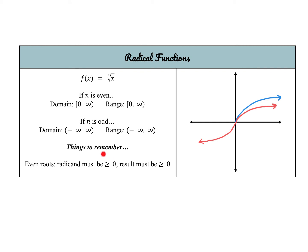For even roots, the radicand — what's inside the root — must be greater than or equal to 0. That's how you define the domain. And the result must also be greater than or equal to 0, unless there are transformations applied.